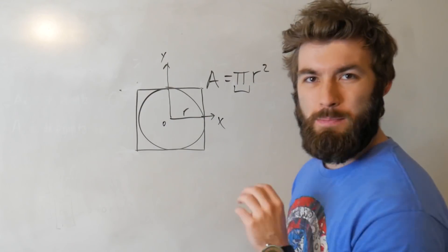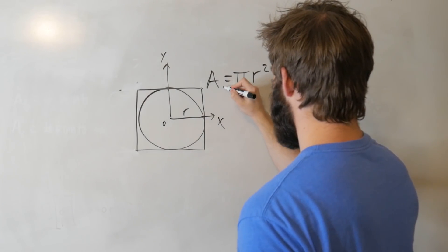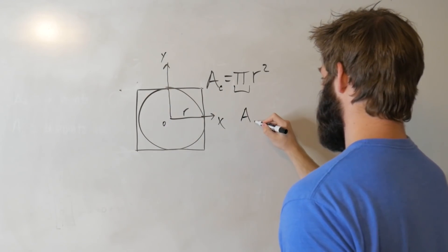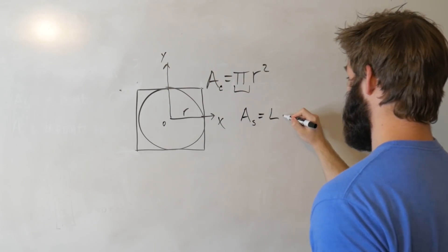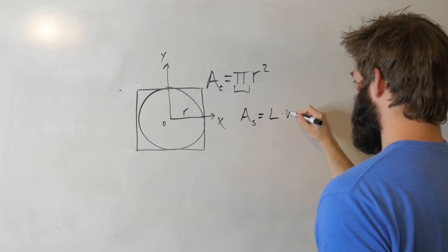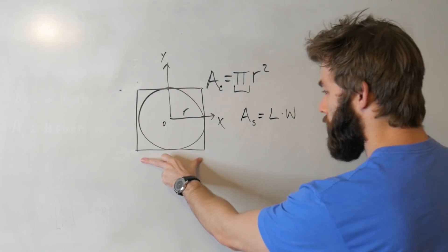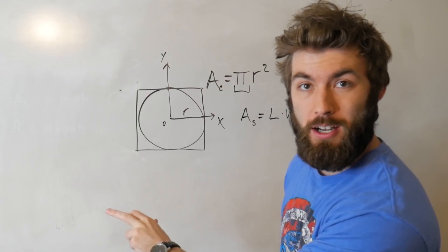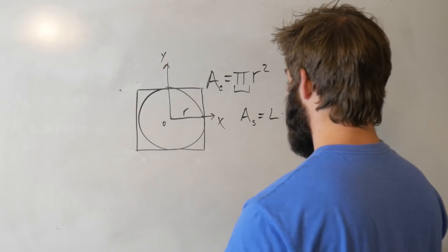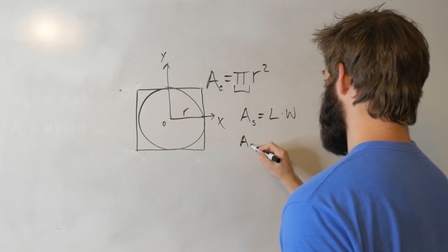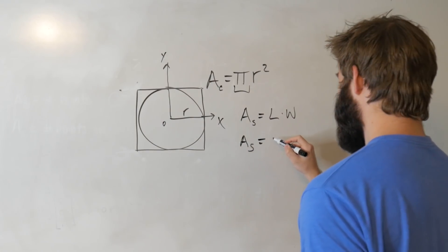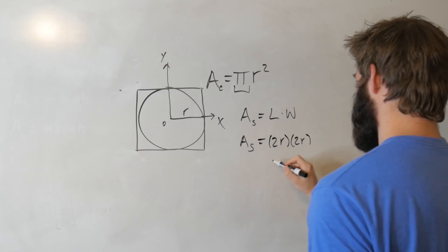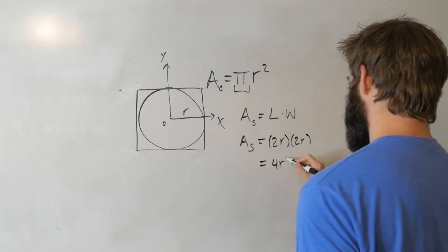Just to keep everything notationally clear, the area of a circle is pi r squared, and the area of a square is just its length times its width. The width of this square is just going to be the same thing as twice its radius, and the same goes for the height. So the area of this square is equal to 2 times the radius times 2 times the radius, which is equal to 4 r squared.